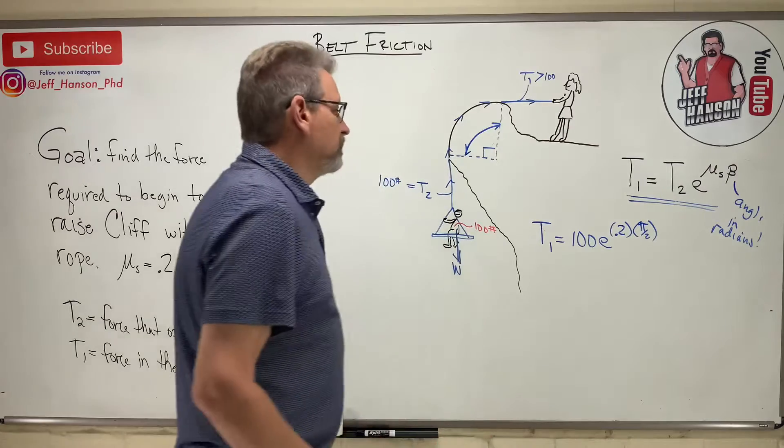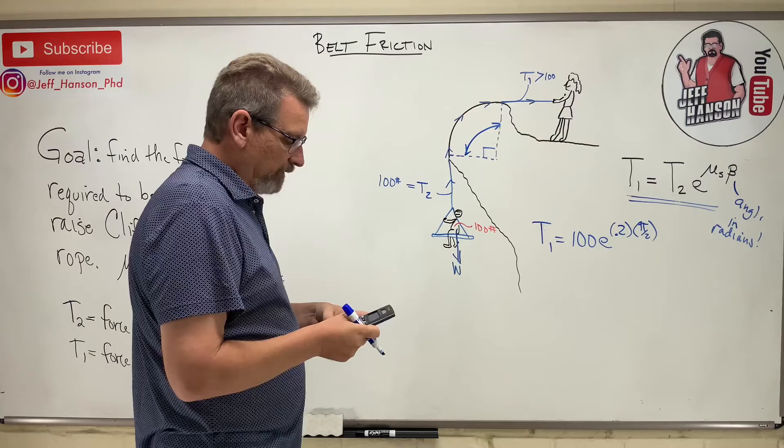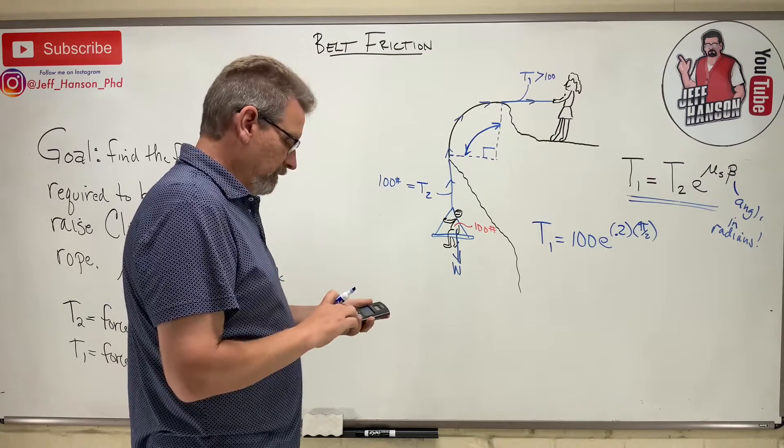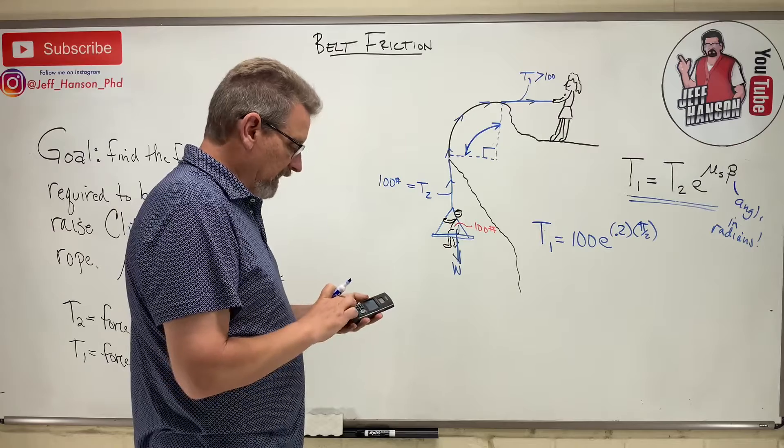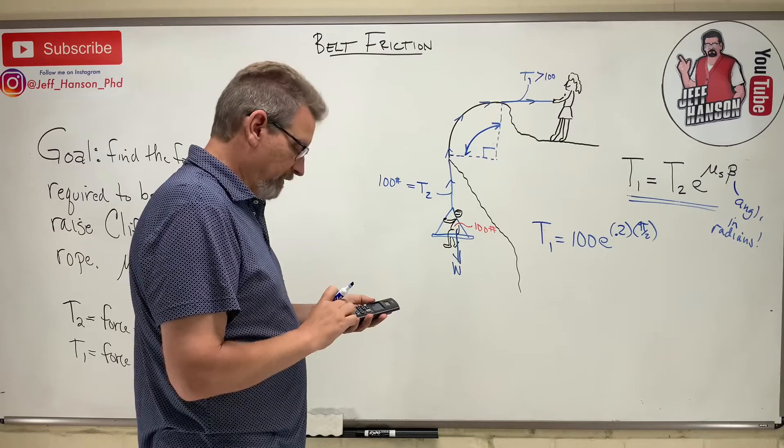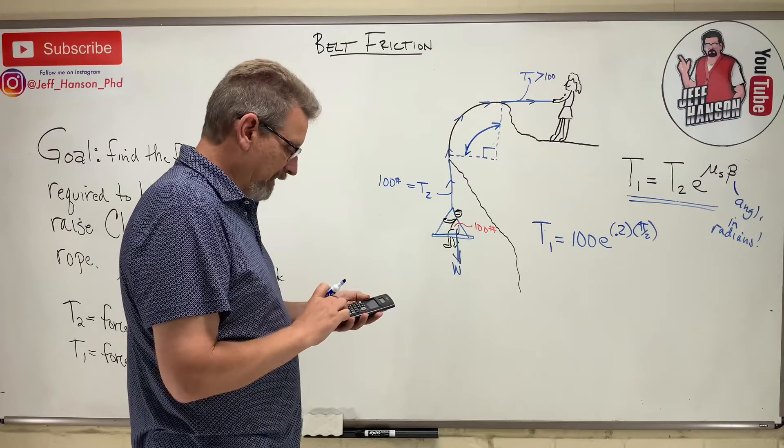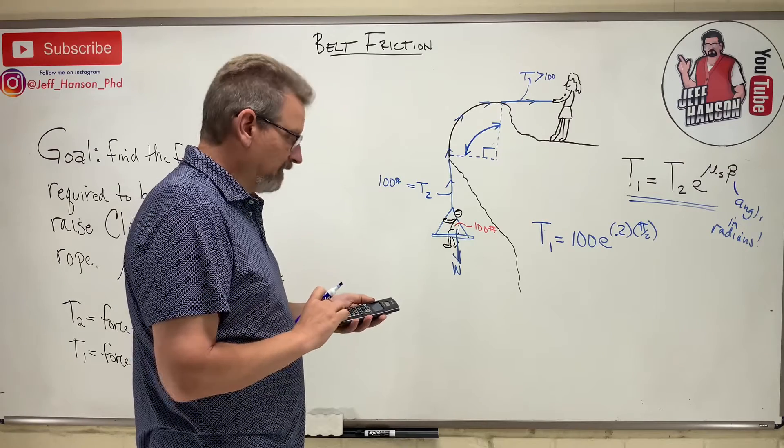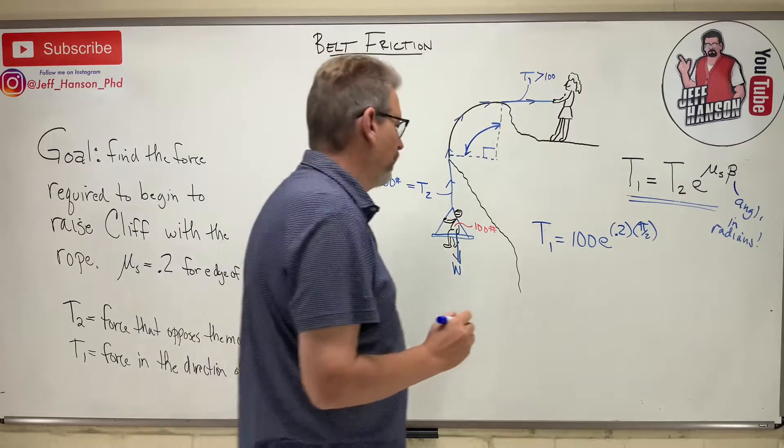Let's put that in our calculator. Mr. Calculator. Do you all have an e button on your calculator? Here we go. So I'm going to do this: 100, and then e to the - I better put parentheses - 0.2 times pi divided by 2, parentheses, equals 136.9.